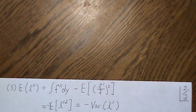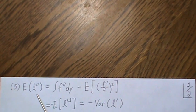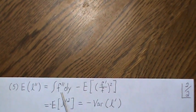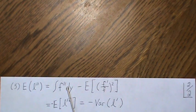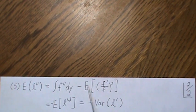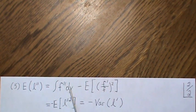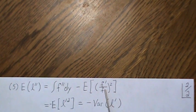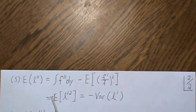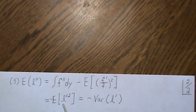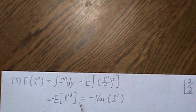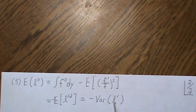For property five: the expected value of the second derivative of the log-likelihood can be shown to equal negative the expected value of (L')². Because the expected value of L' is zero, that term equals the variance of L'. So the expected value of the second derivative of the log-likelihood equals negative the variance of the score.